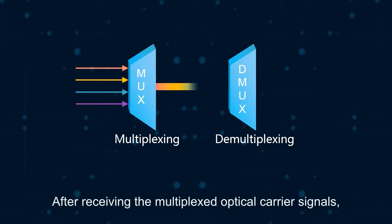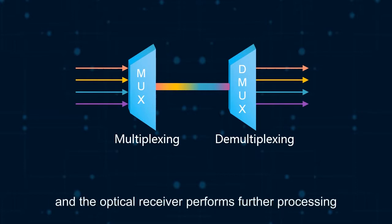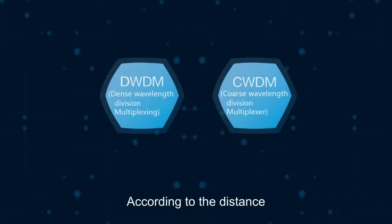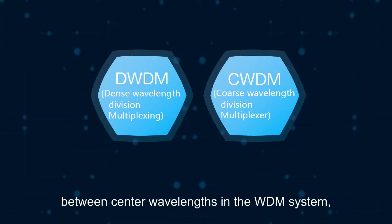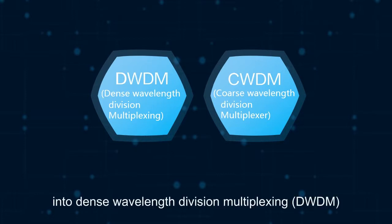After receiving the multiplexed optical carrier signals, the demultiplexer at the received end splits them apart, and the optical receiver performs further processing to restore the original signals. According to the distance between center wavelengths in the WDM system, wavelength division multiplexing can be classified into dense wavelength division multiplexing, DWDM, and coarse wavelength division multiplexing, CWDM.